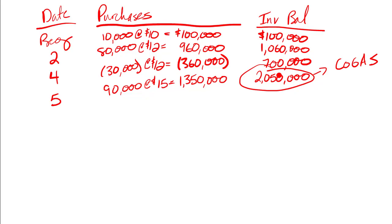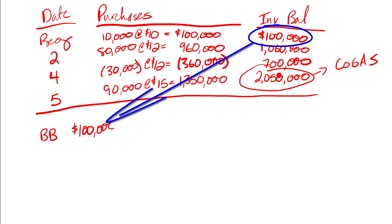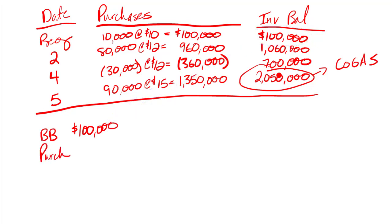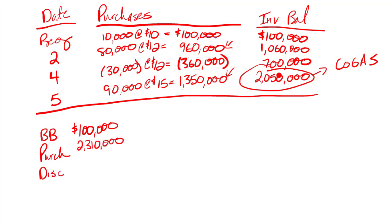Now let's gather the information needed for a cost of goods sold section on my income statement. Beginning balance was $100,000. Our purchases — $960,000 and $1,350,000 — give total purchases of $2,310,000. There are no discounts in this example, but if there were, I would go back to the table and change that value at the point the discount applied, then use that updated number for all remaining calculations.